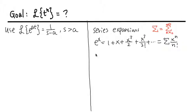We are going to apply this to e to the a t. This series expansion is true for all x values — the radius of convergence covers all x. Since we are looking at e to the a t centered at 0, we can plug a t in for x to find the series expansion.